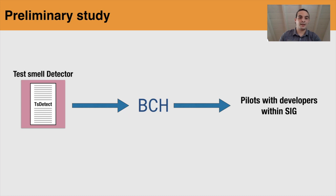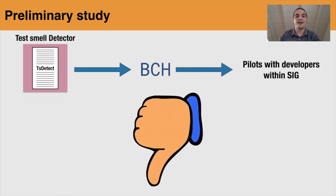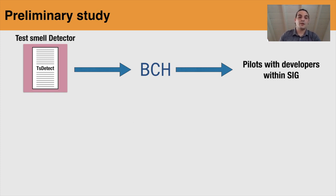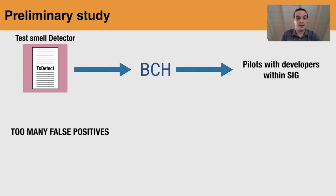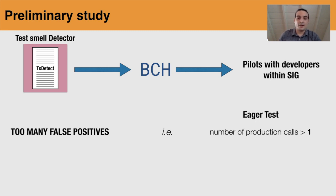So we did it. We selected a test smell detector, put it in Better Code Up, and ran some pilots with developers within the company. And the results were horrible. Developers did not like it at all. This happened for two reasons. Reason one: there were too many false positives. If the tool outputs too many false positives, developers start to not trust the metric, and even when the tool is right and the instance is not a false positive, they still believe it's not right. For example, in the case of an eager test instance, the current detection rule is whether the number of production calls is higher than one. That threshold is a little bit low according to them — too sensitive, producing just too many false positives.